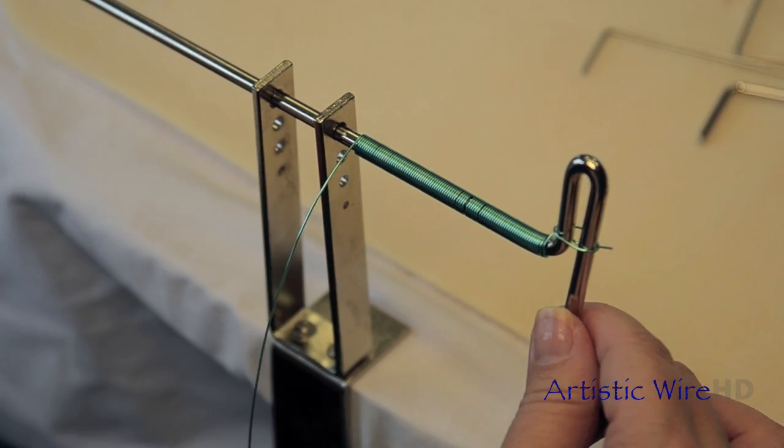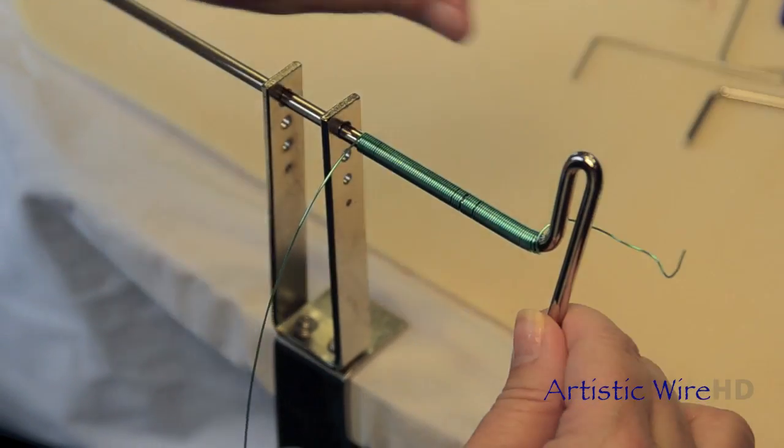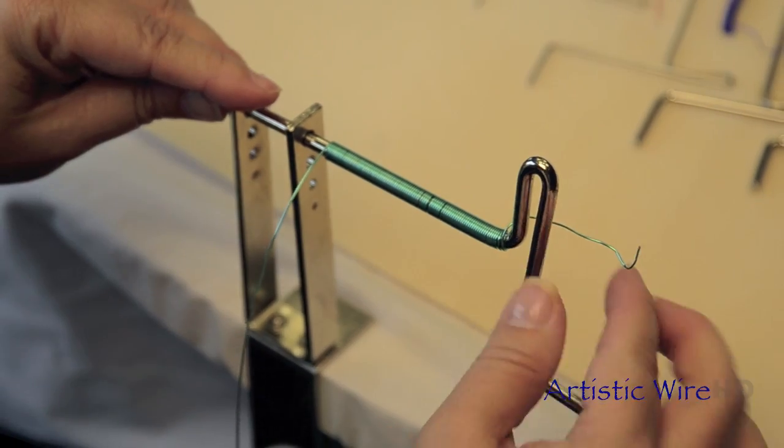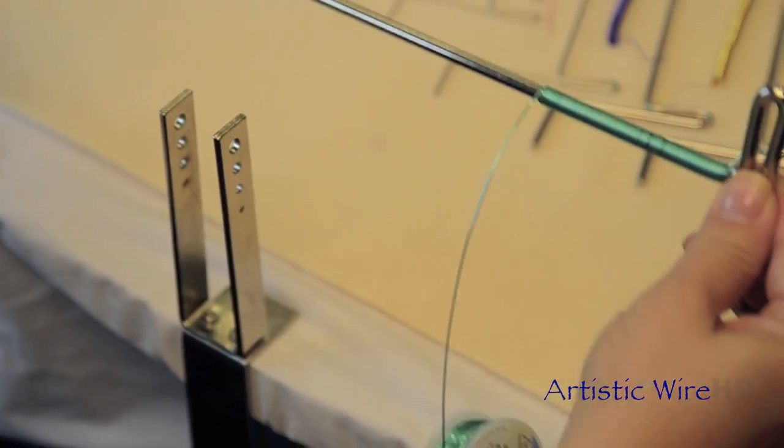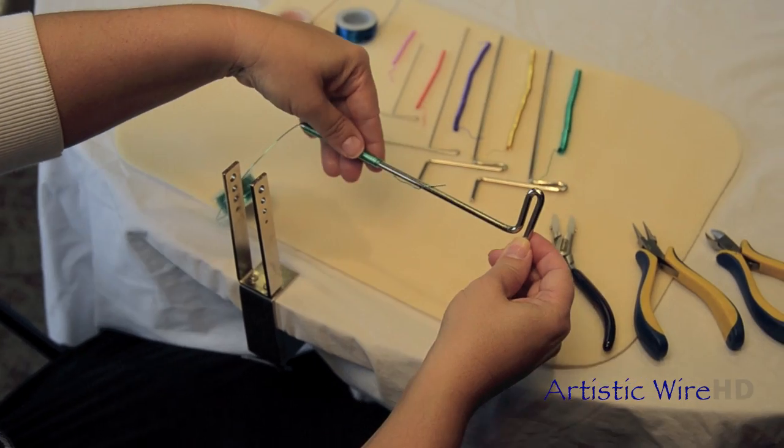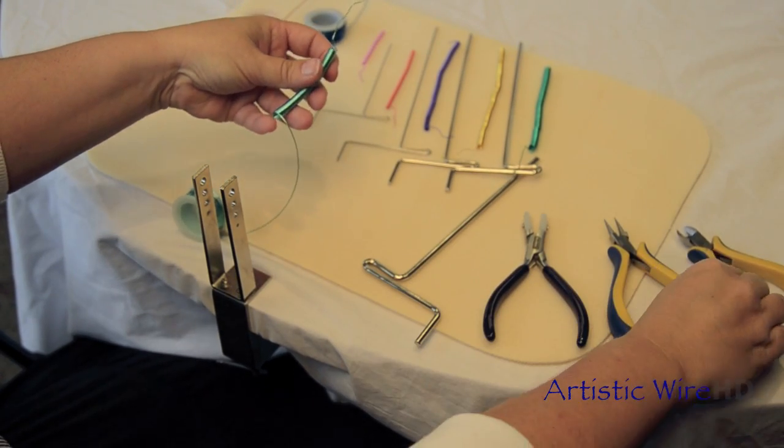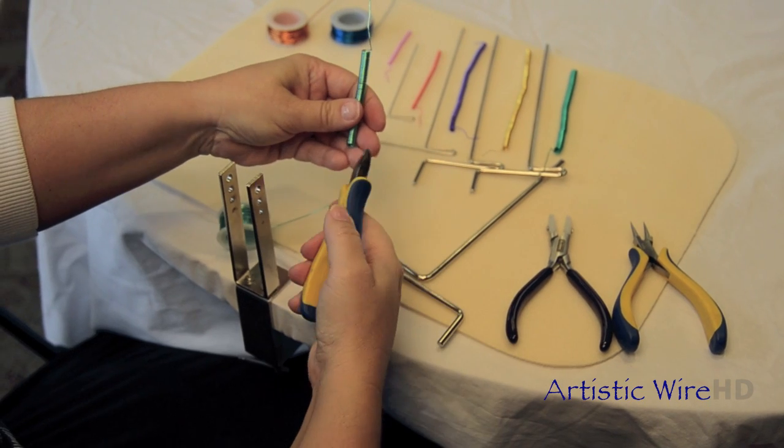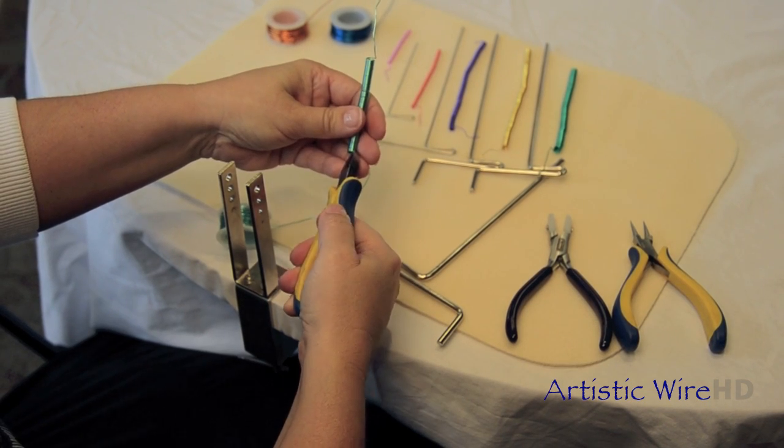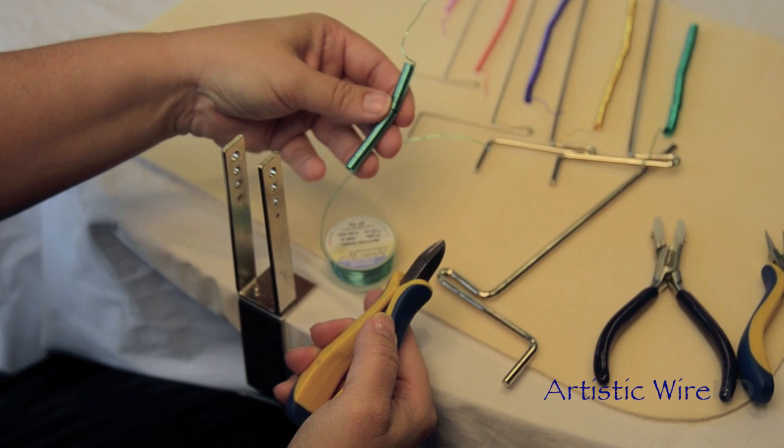And then what I'm going to do is unwrap that wire from the handle, slide the rod off. And then very carefully, I'm just going to remove the coil off of the rod. Take my wire cutters and right down here, I'm going to remove that from the spool.